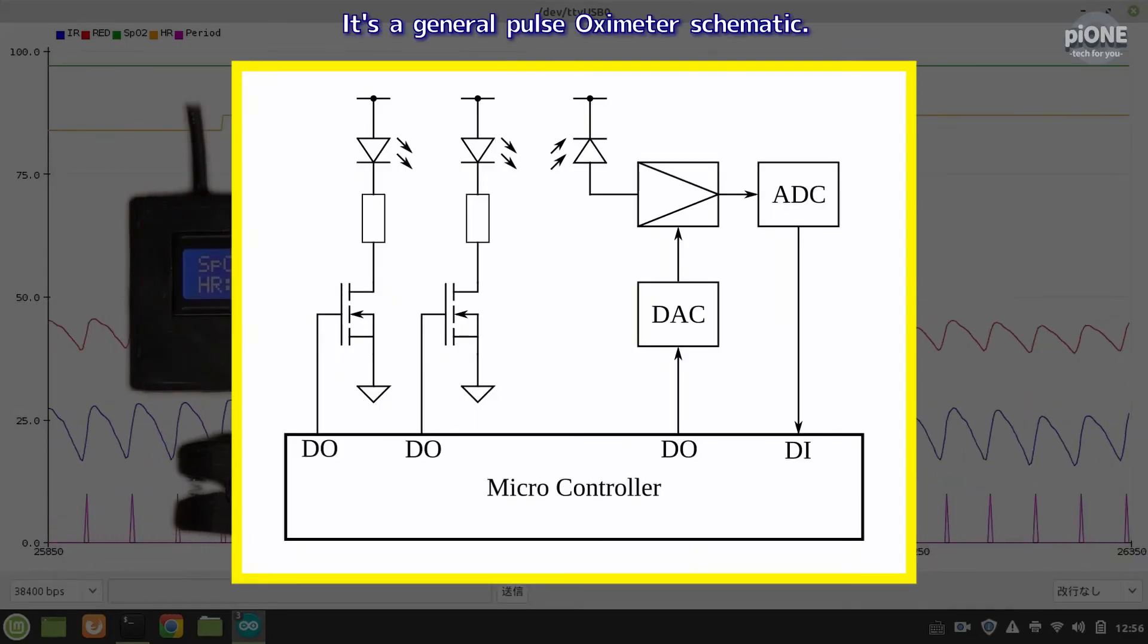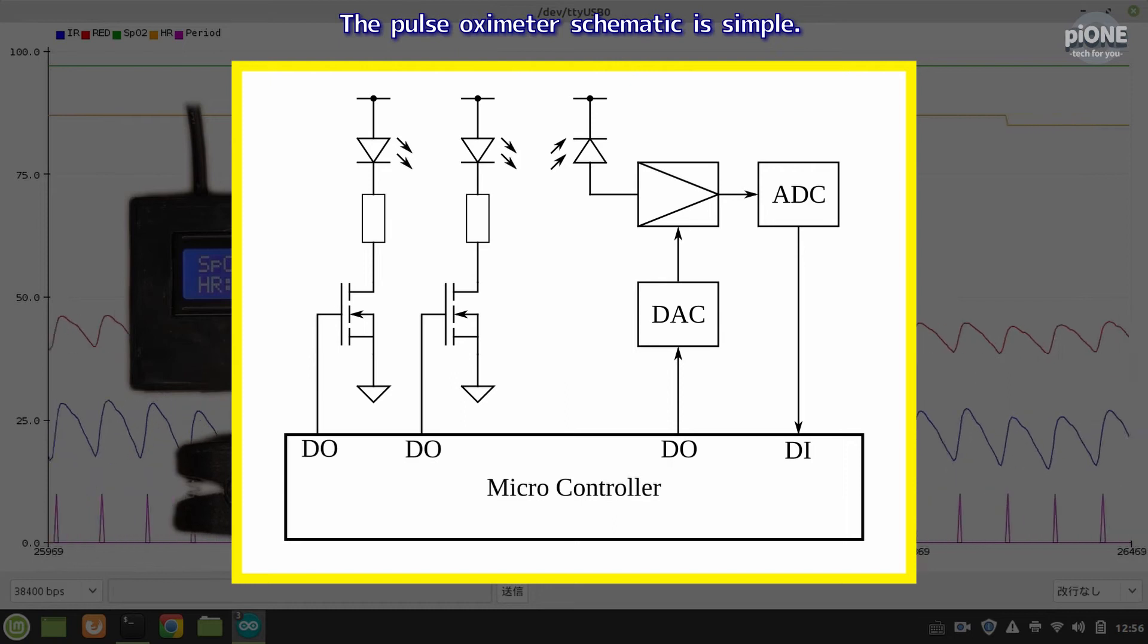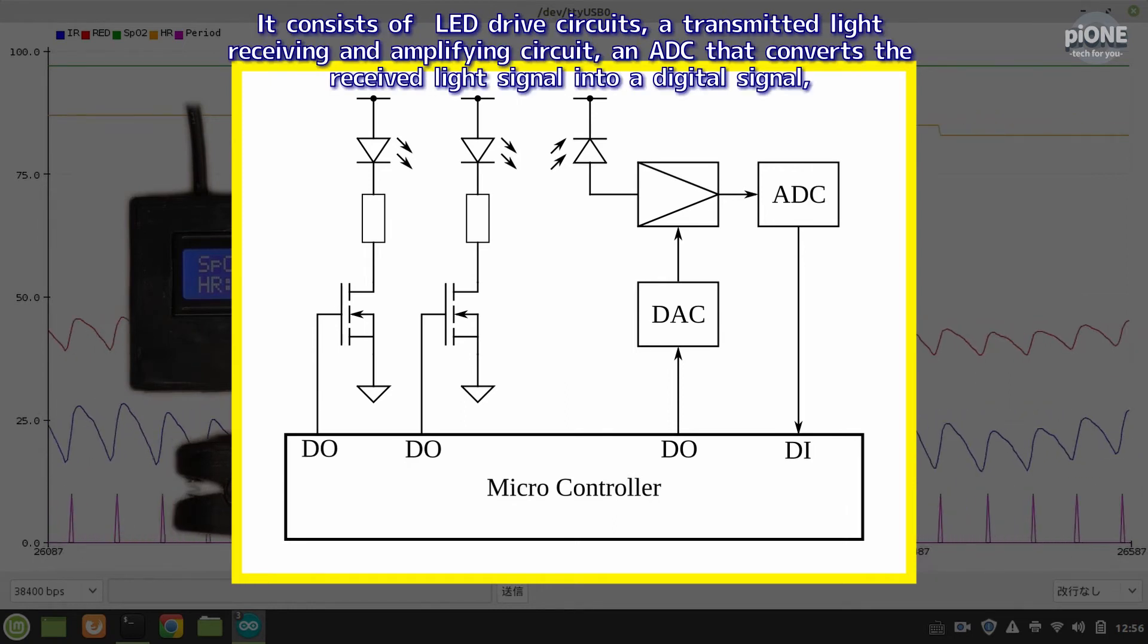It's General Pulse Oximeter Schematic. The pulse oximeter schematic is simple. It consists of LED drive circuits, a transmitted light receiving and amplifying circuit, an ADC that converts the received light signal into a digital signal,